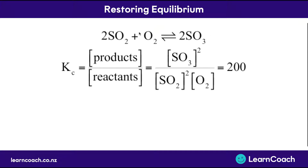But what if instead of just letting this reaction take place, we add a whole lot of oxygen gas? By increasing the concentration of oxygen, that will affect our Kc — in this case making it lower. So we need to know what will happen to our equilibrium constant Kc.